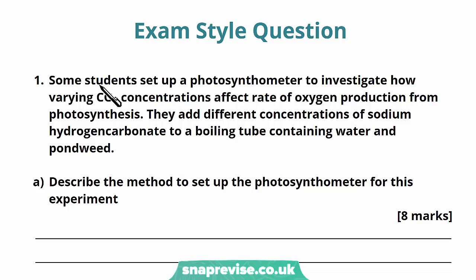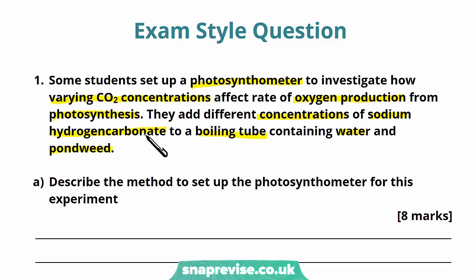The question says: some students set up a photosynthometer to investigate how varying CO2 concentrations affect the rate of oxygen production from photosynthesis. They add different concentrations of sodium hydrogen carbonate to a boiling tube containing water and pondweed. This is similar to the practical we've covered before, but this time we're measuring how CO2 concentrations affect the rate of oxygen production. The source of carbon dioxide in this case is the sodium hydrogen carbonate.